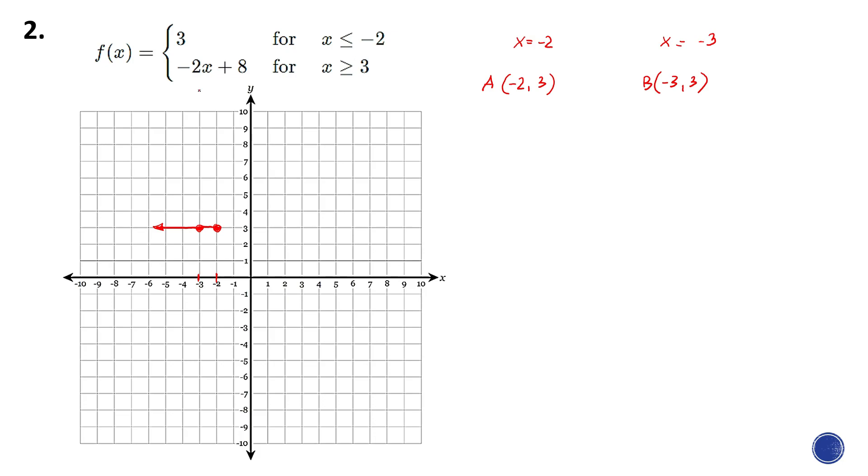Next, we have -2x + 8 for x ≥ 3. We will start with the given number, so that is 3.